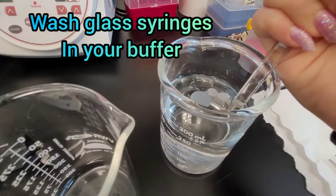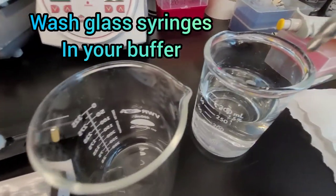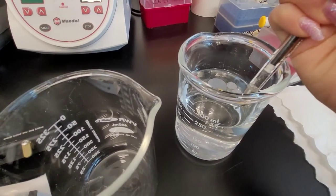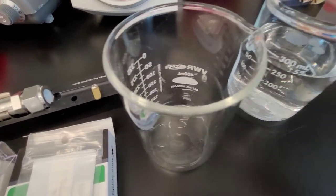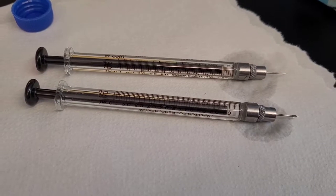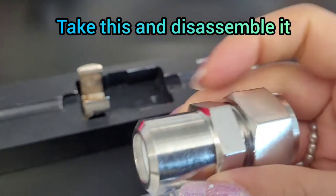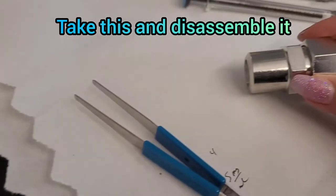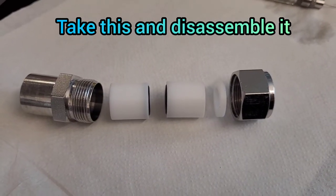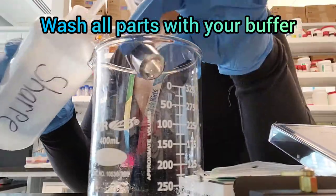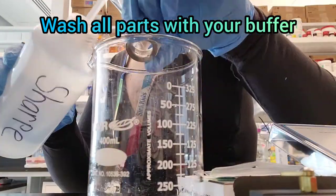The buffer that I'm talking about is what you resuspend your lipids in, and for me it is 20 millimolar tris. Usually these are cleaned in methanol before storage, so it's always a good practice to wash everything before you do extrusion. I do the same thing with the parts that hold the filters, washing them really well.